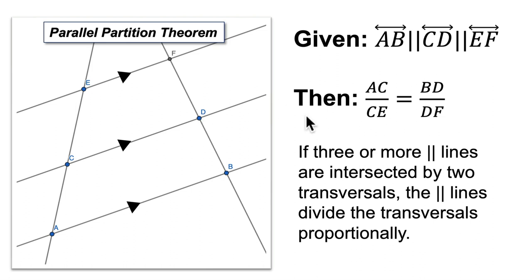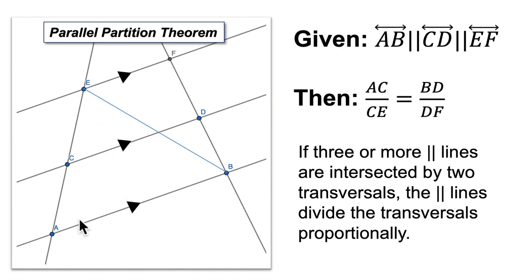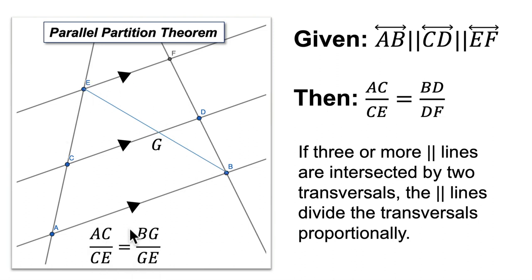Where does it come from? We just need to set up the side splitter theorem. Draw a line from E to B — this line connects E and B. Now you have a triangle, and this triangle is cut by a line in the middle that's parallel to the bottom side. We can use the side splitter theorem: calling this point G, the ratio of AC to CE equals the ratio of BG to GE.